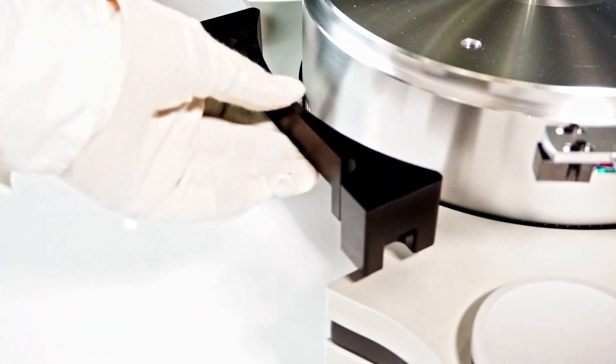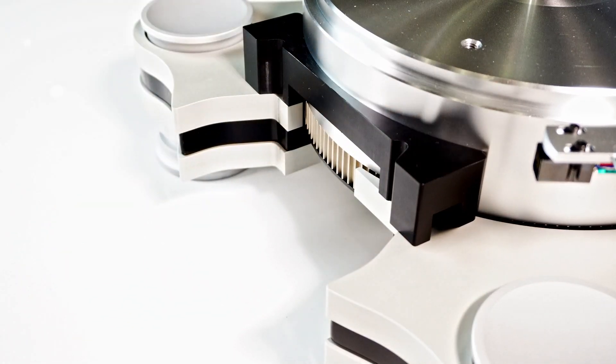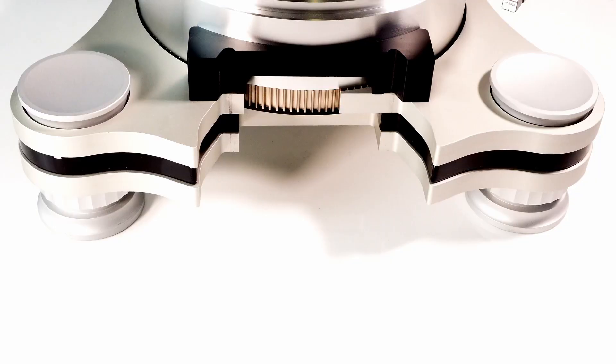Place the spacer block on the base unit and fit the block snugly to the curved surface of the platter side.